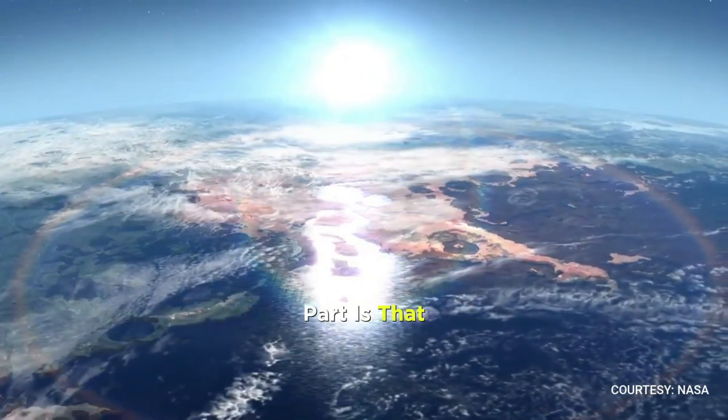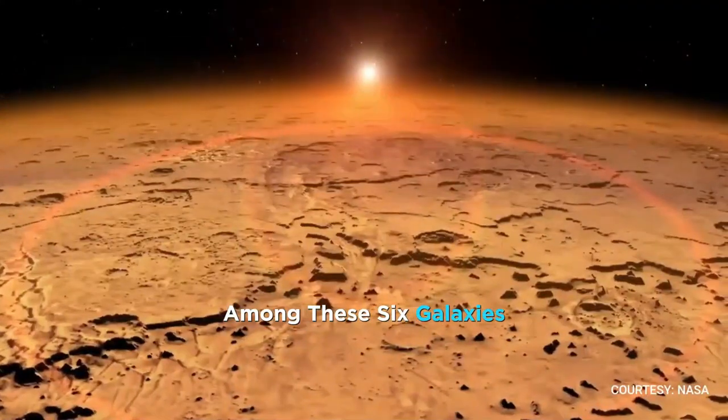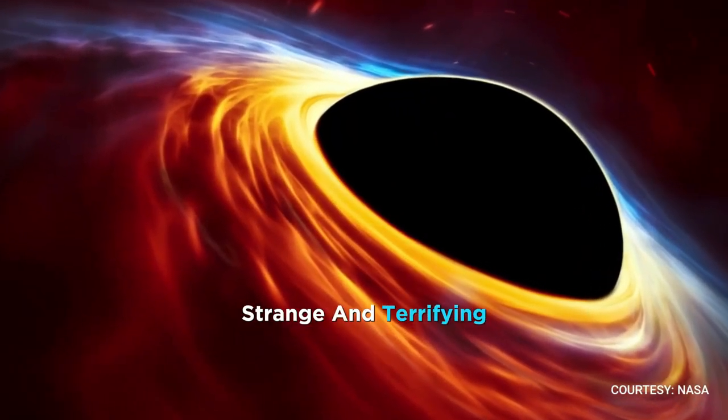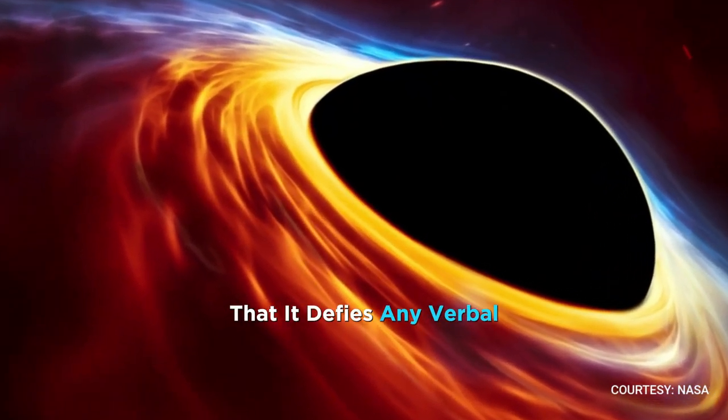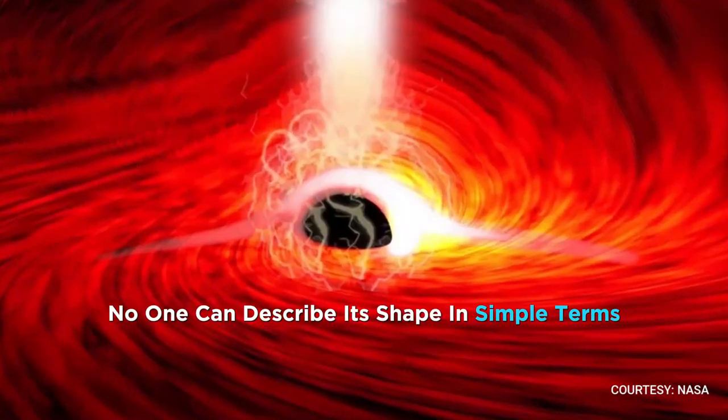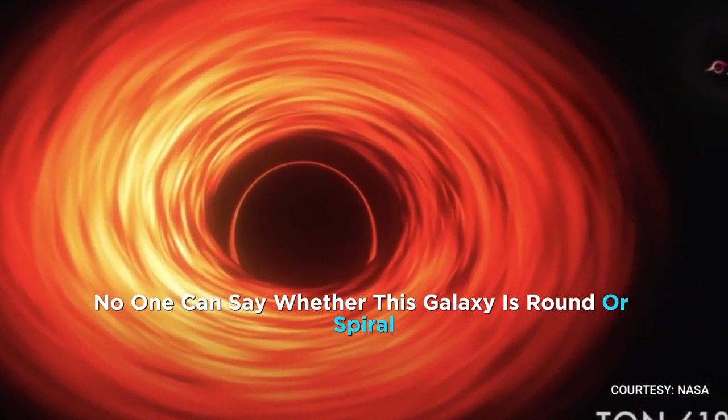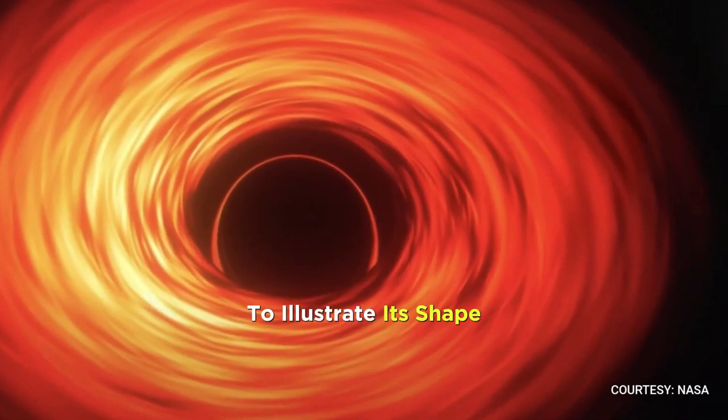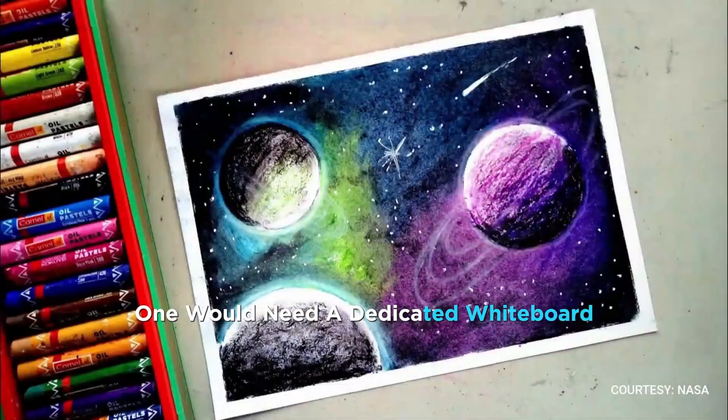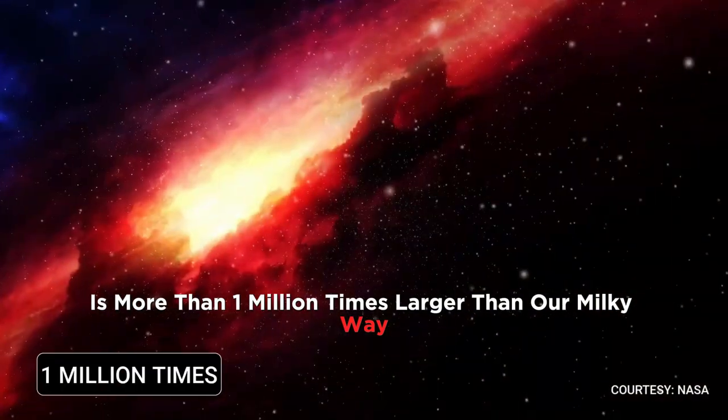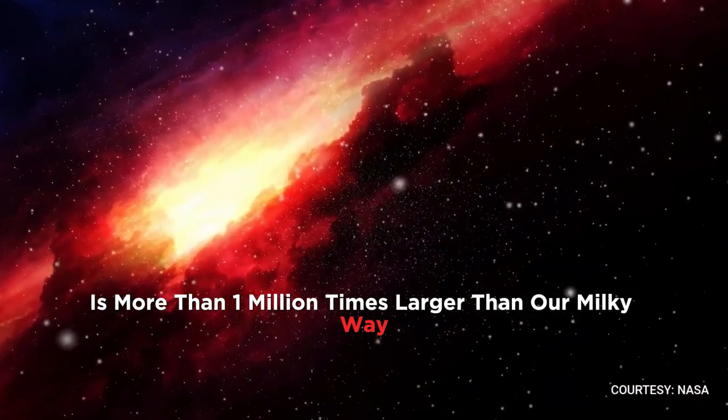And the most fascinating part is that among these six galaxies, there is one galaxy with a shape so incredibly strange and terrifying that it defies any verbal explanation. No one can describe its shape in simple terms. No one can say whether this galaxy is round or spiral. To illustrate its shape, one would need a dedicated whiteboard. This galaxy is more than 1 million times larger than our Milky Way galaxy.